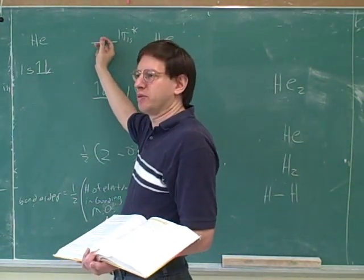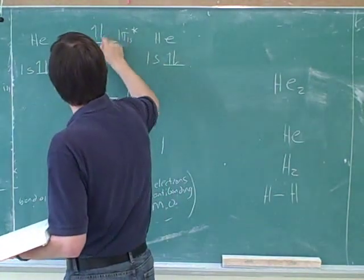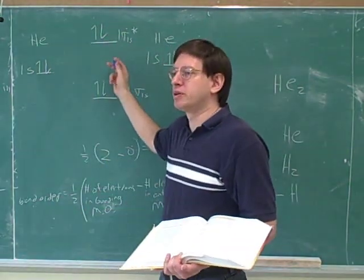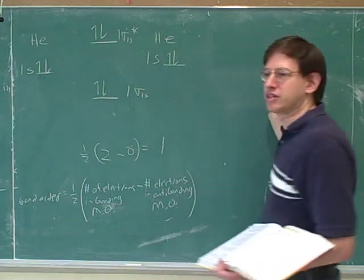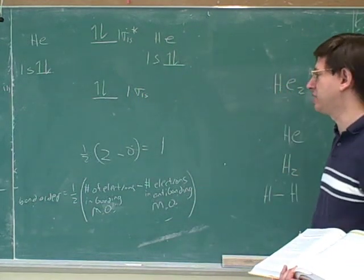So now let's finish putting the electrons into this picture. How many electrons will be in this anti-bonding orbital? Two. So this is what the molecular orbital diagram looks like for He2.